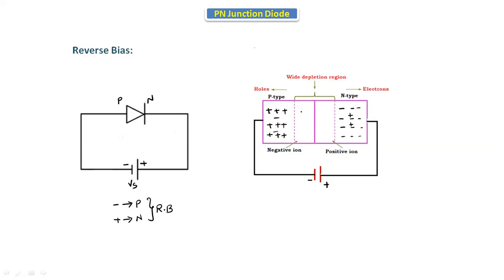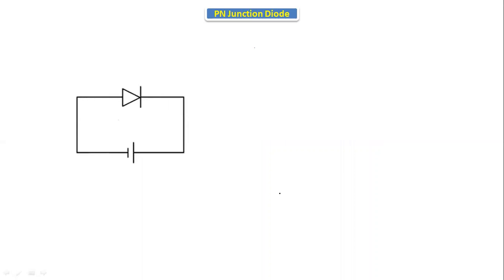In reverse bias, the negative ions in the depletion region are more compared to forward bias. There is no movement of charge carriers in the depletion region. Because the negative terminal is connected to P and the positive terminal to N, the holes and electrons move away from the junction, so the depletion region width increases. As the depletion region width increases, there is no conduction of the PN junction diode.